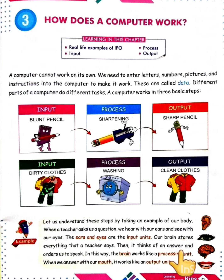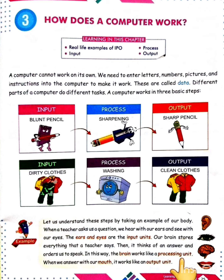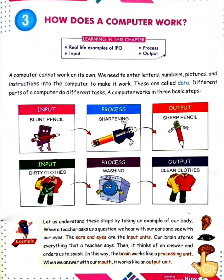Our brain stores everything that our teacher says, then it thinks of an answer and orders us to speak. In this way, the brain works like a processing unit. When we answer with our mouth, it works like an output unit. So, our ears and eyes are the input units, our brain is the processing unit, and our mouth is the output unit.